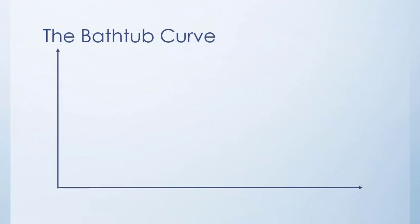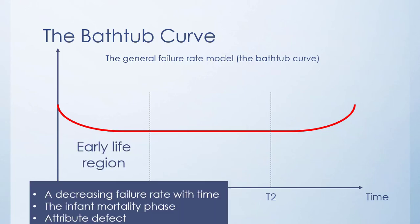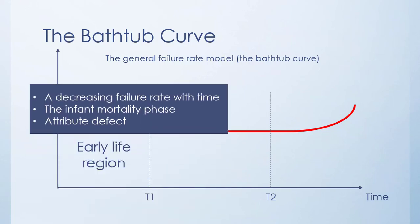One of the earliest models of failure rate, the bathtub curve, is so named because of its shape. The failure rate versus time can be divided into three regions. The first region is characterized by a decreasing failure rate with time and is conventionally referred to as the infant mortality phase, or the early life region of the product, component, or system. Experience shows that the length of this region is about 10,000 hours for most electronic components.